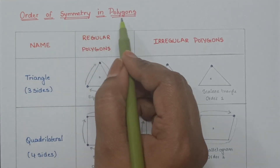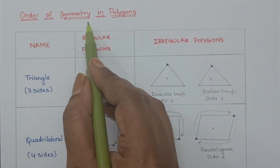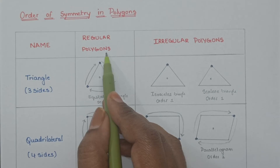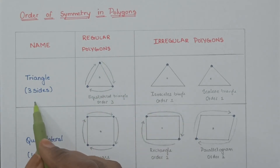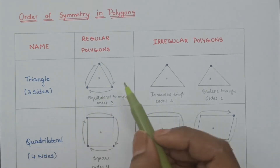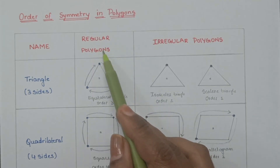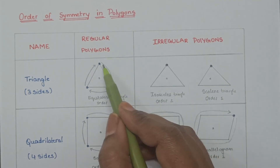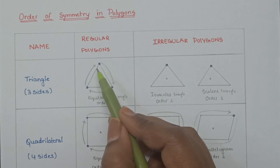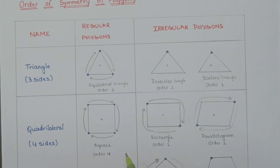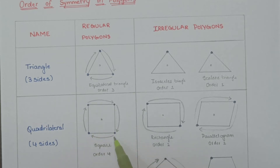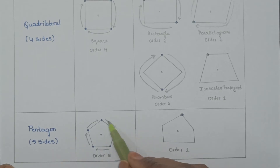Order of symmetry in polygons. The order of symmetry of a regular polygon is always equal to the number of its sides. Equilateral triangle is a regular polygon, so the order equals 3. Square is a regular polygon, so the order equals 4. Regular pentagon has order 5.